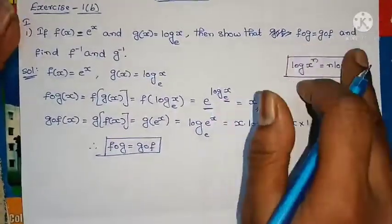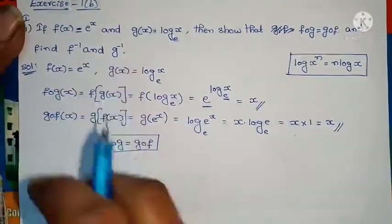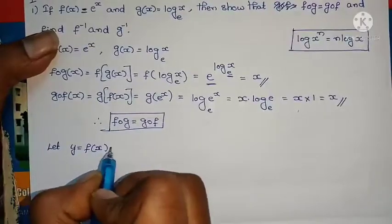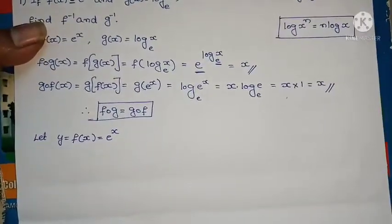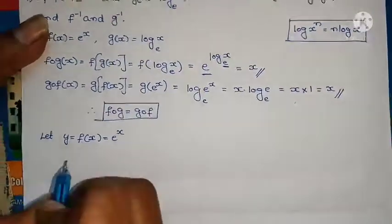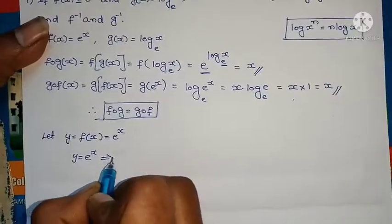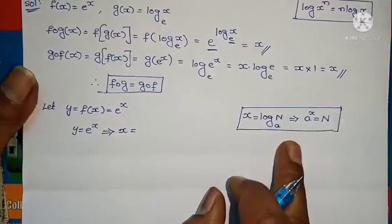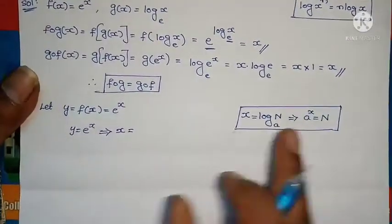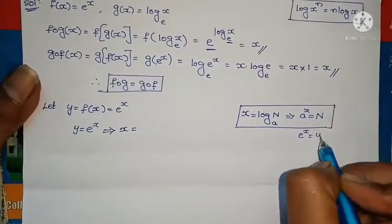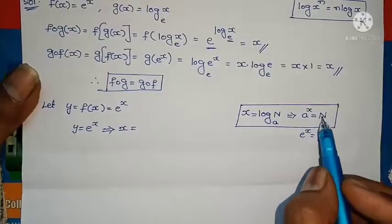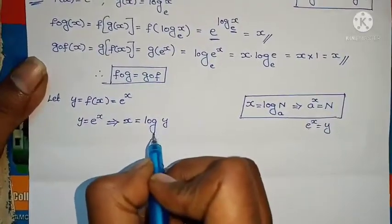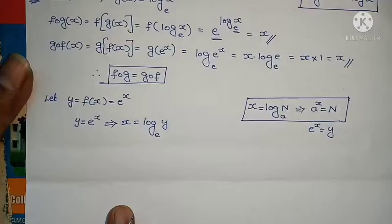Now we need to find f inverse and g inverse. First, let y = f(x) = e^x. From this, we need to find x in terms of y. Using the formula: if e^x = y, then x = log_e(y).